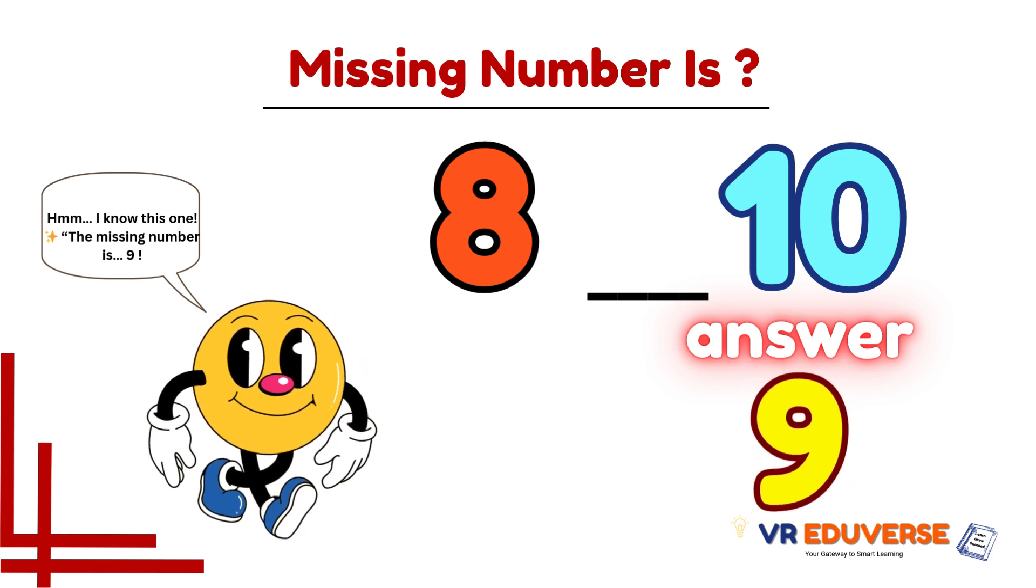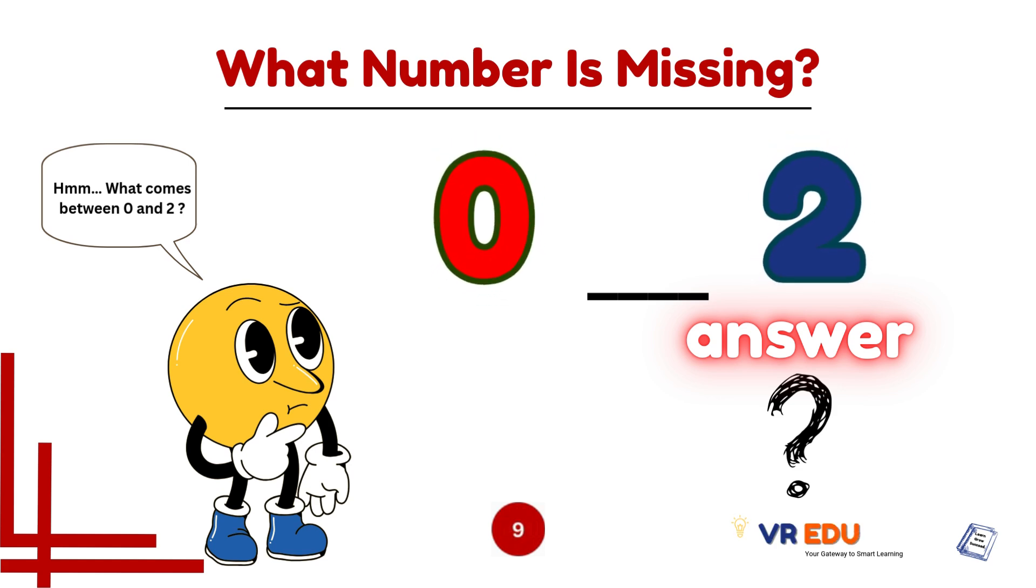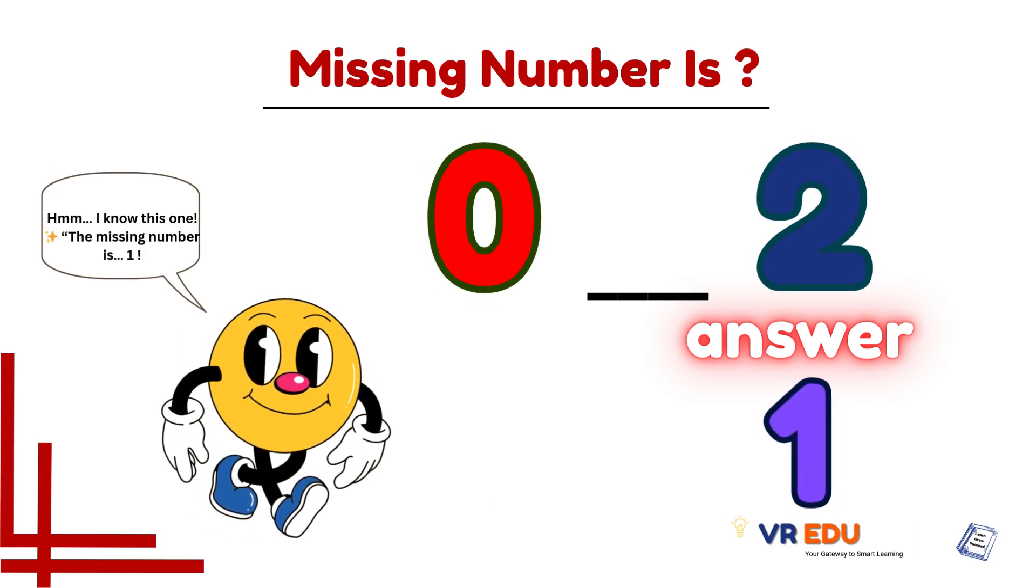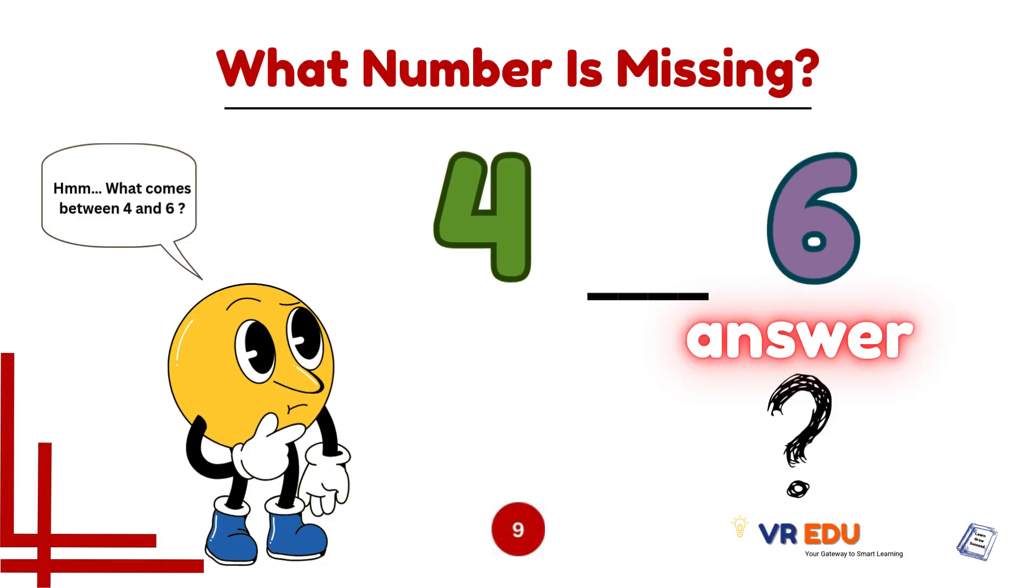Here is a tricky one. What comes between 0 and 2? Say the answer before I reveal it. It's number 1. You are smart, let's move on.